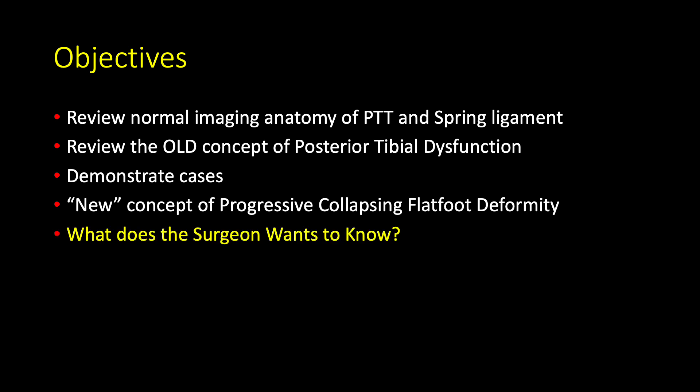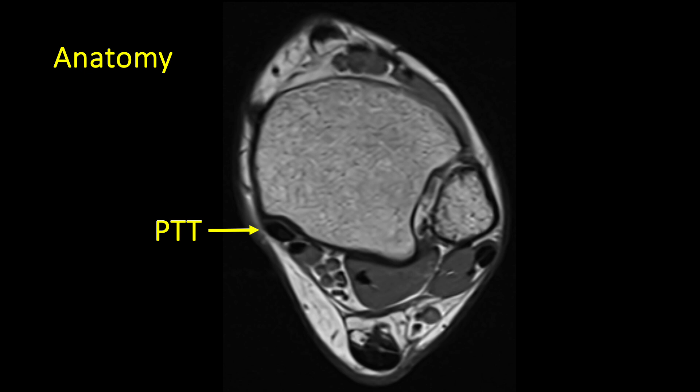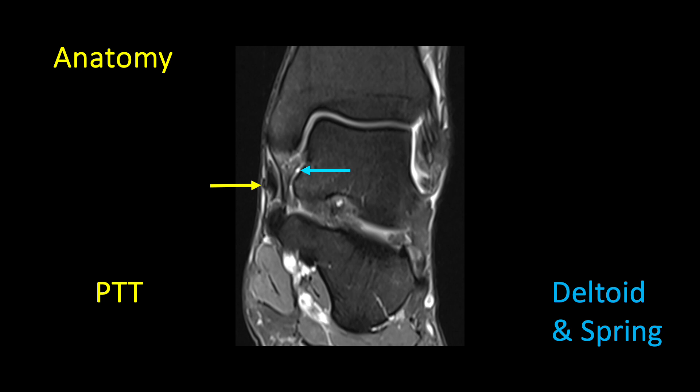Finally, I'm going to focus on what it is the surgeon wants to know. A basic review of the anatomy, first in the axial plane, from medial to lateral in the flexor compartment, we see the posterior tibial tendon, the adjacent flexor digitorum longus tendon, the tibial neurovascular bundle, and the flexor hallucis longus tendon. Now I'll be scrolling anteriorly in the coronal plane, highlighting the posterior tibialis in yellow and the deltoid and spring ligament in blue.